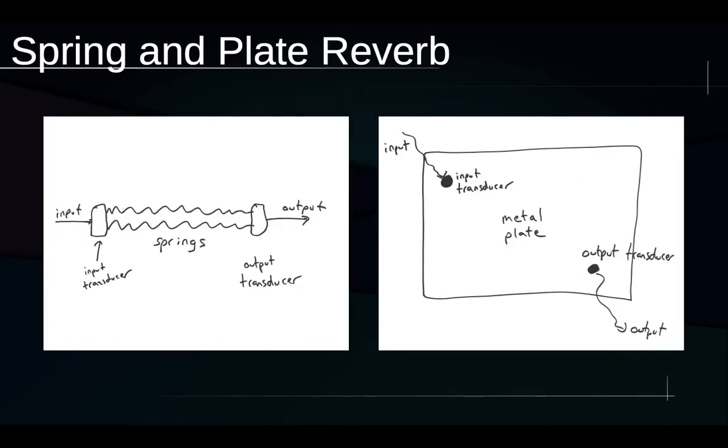Spring and plate reverbs are two more portable but still mechanical ways of simulating reverb. The spring reverb in particular is something you'll still encounter nowadays, often built into guitar amplifiers. The basic idea is that you have an input signal and you have some kind of input transducer that turns the input signal into mechanical vibration, and it's connected to a series of pretty tight springs. At the end of those tight springs is another output transducer that turns the vibration of the springs back into electrical energy.